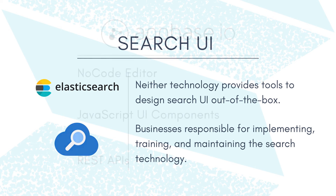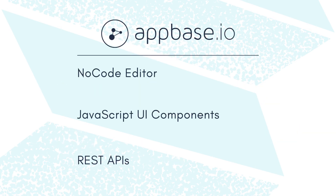Here is where AppBase.io comes in. Businesses can build fast and relevant search experiences using our no-code editor, JavaScript UI components, or declarative REST APIs. Search relevance settings like weights and type of tolerance can be set from a point-and-click control plane in real-time.